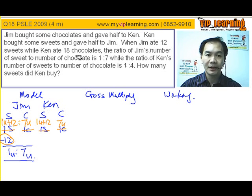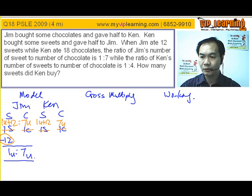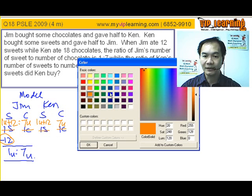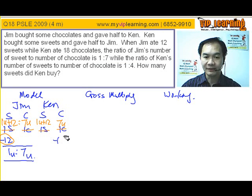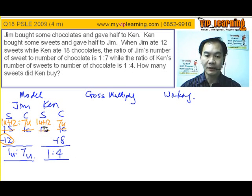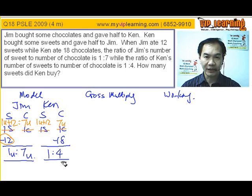Second part of the story: Ken adds 18 chocolates, so we have minus 18 here, and a new ratio emerges — 1 is to 4. So we have this unknown unit plus 12, and after something happens, minus 18, a new ratio emerges. This is where we can use the cross-multiply method.